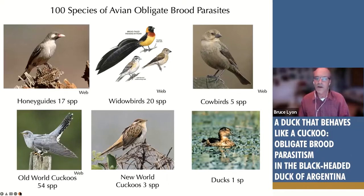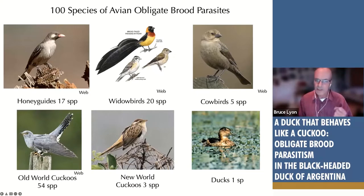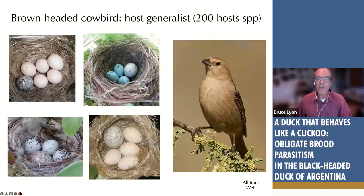Obligate brood parasitism has evolved seven times in different bird groups — in honeyguides, widowbirds, cowbirds, twice in cuckoos, and once in the duck we studied. It's also evolved in one group I'm skipping here. Each of these independent origins makes the black-headed duck particularly fascinating as the sole waterfowl example.